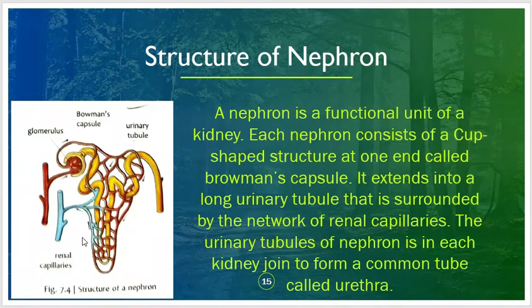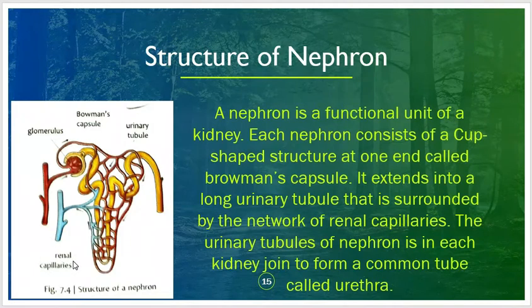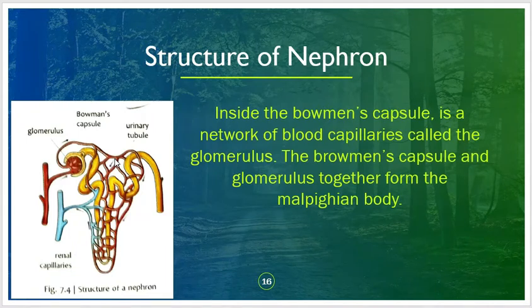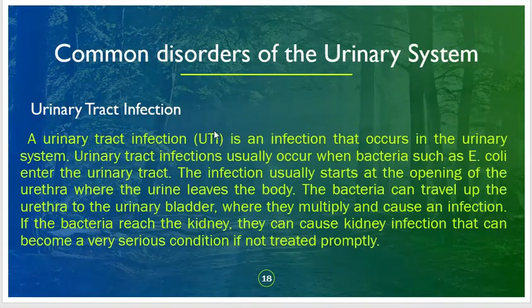The nephron is the functional unit of the kidney. Each nephron consists of a cup-shaped structure called Bowman's capsule, which extends into a long urinary tubule surrounded by a network of renal capillaries. The urinary tubules of nephrons in each kidney join to form a common tube called the urethra. Inside the Bowman's capsule is a network of blood capillaries called the glomerulus. The Bowman's capsule and glomerulus together form the Malpighian body.